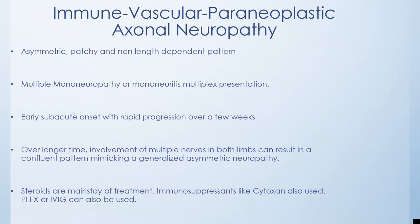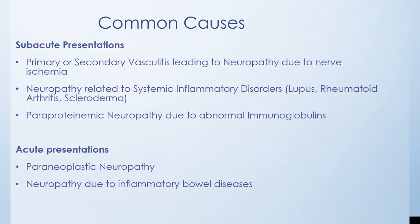CIDP incidence is one to nine per hundred thousand, and five to fifteen percent of CIDP cases may actually present acutely as GBS. When a patient presents with acute demyelinating neuropathy we presume GBS, but long-term follow-up is needed to determine if more attacks occur, reclassifying it as CIDP. Another form is immune, vascular, and paraneoplastic axonal neuropathy — these are asymmetric, patchy, and non-length-dependent, typically presenting as mononeuropathy multiplex, with early subacute onset over a few weeks. Steroids are the mainstay of treatment; immunosuppressants like cyclophosphamide, plasma exchange, or IVIG can also be used.